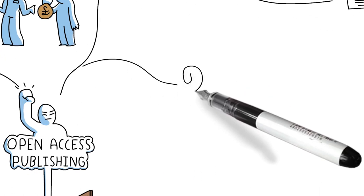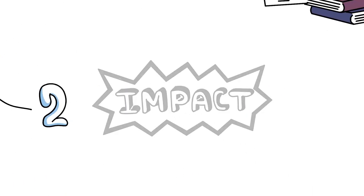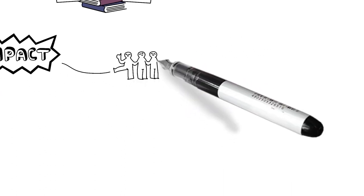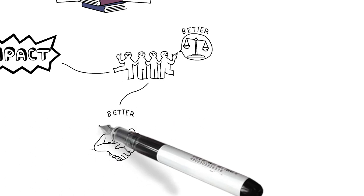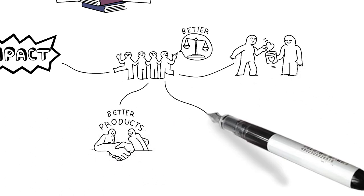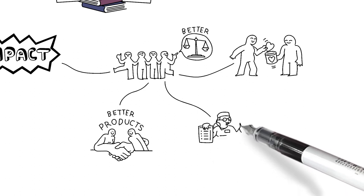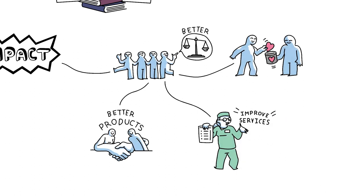Second, it allows your work to have more impact. If you publish open access, this can benefit society in a whole range of ways. Policymakers can use it to inform better laws. Businesses can use it to make better products. Charities can use it to help people in need, and practitioners can use it to improve services they offer.